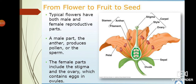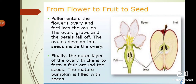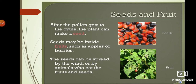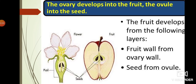From the ovules, seeds develop. Pollen enters the flower's ovary, fertilizes, grows into the ovules and develops into seeds, and the ovary grows into fruit. Finally, the outer thicker layer of the ovary becomes the fruit's outer wall. Seeds are always inside the fruit. Seeds can be spread by wind, by humans, or by animals. The fruit wall develops from the ovary wall, and the seed develops from the ovule.